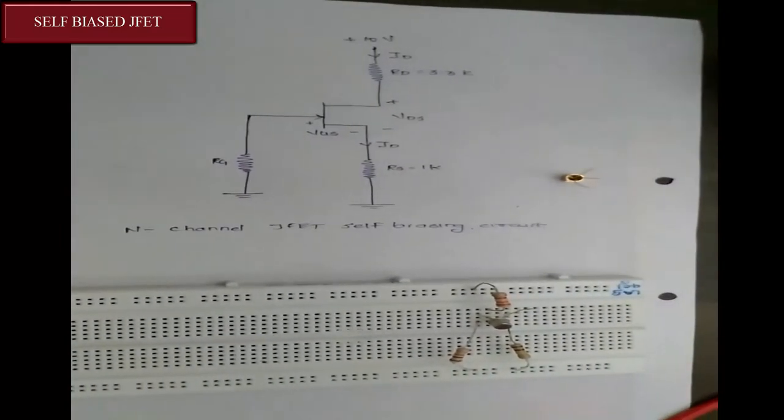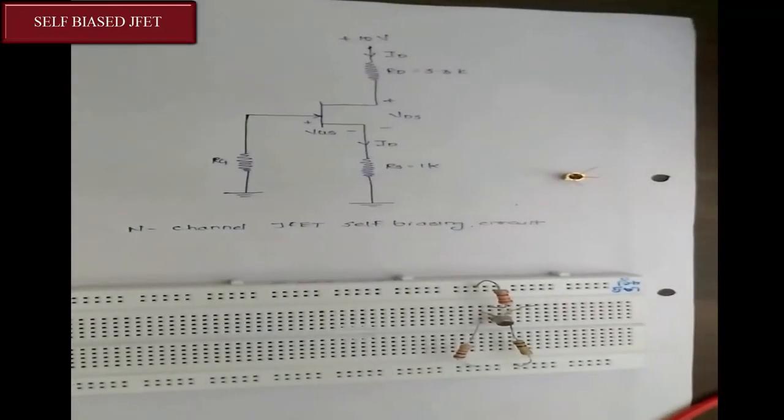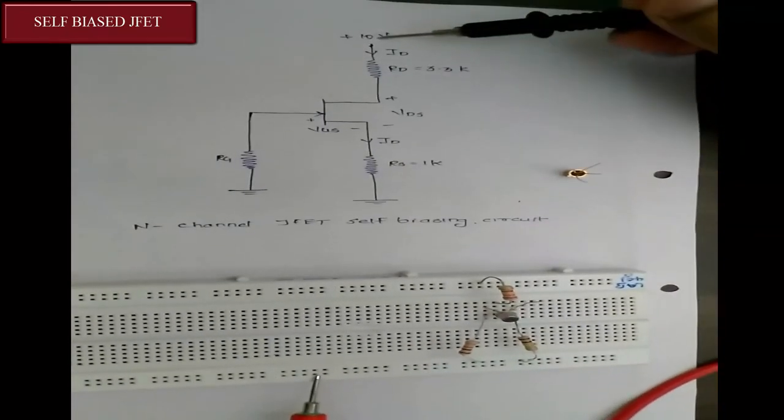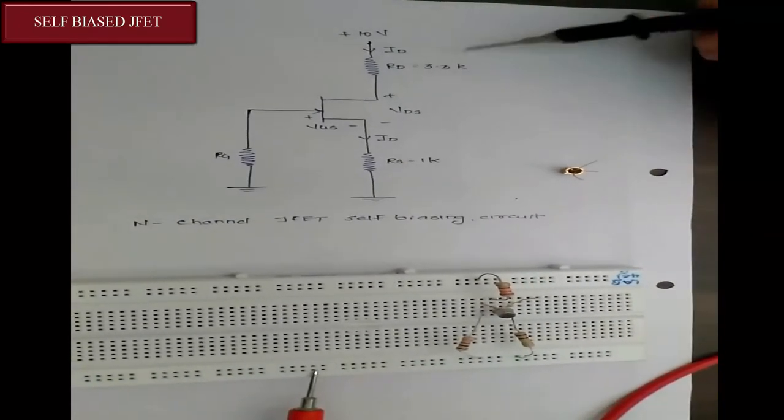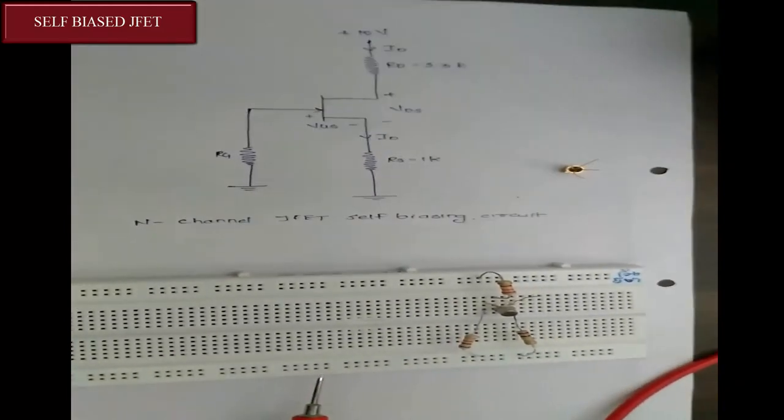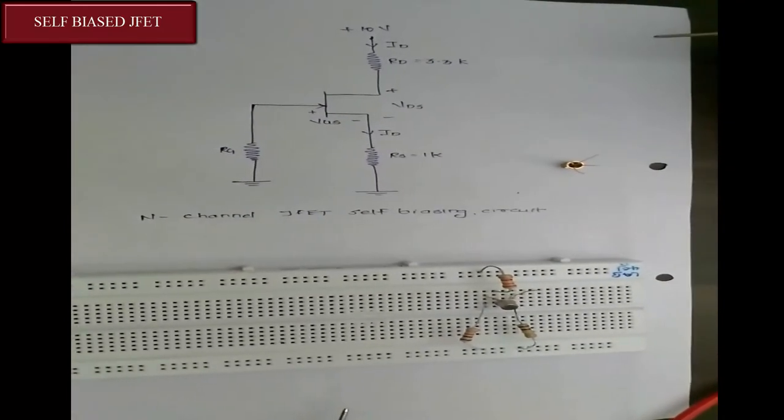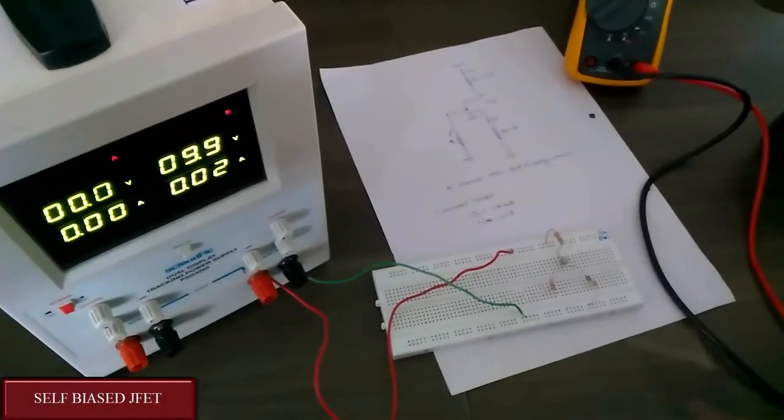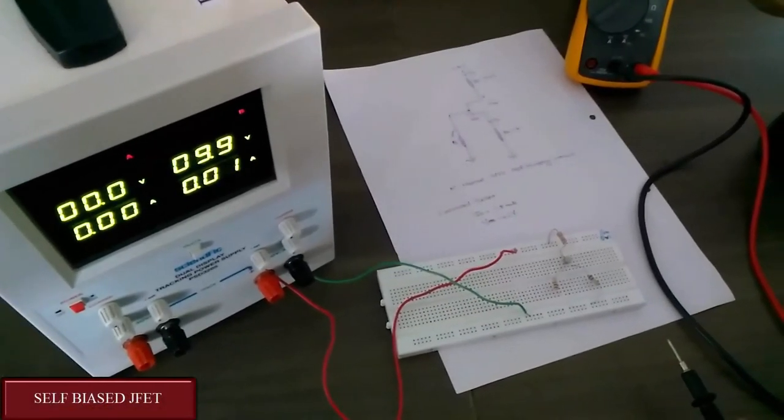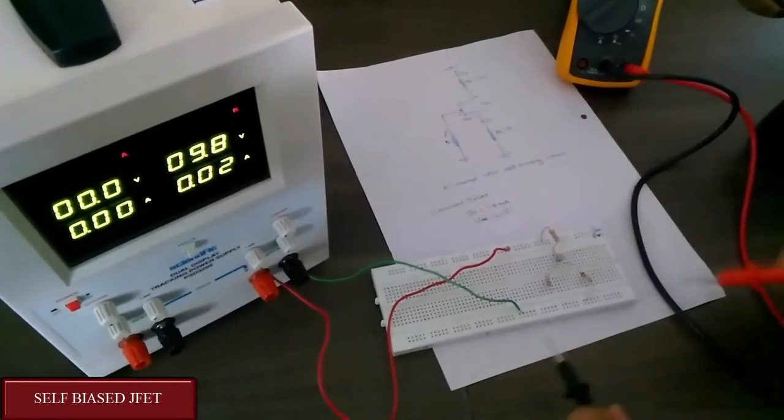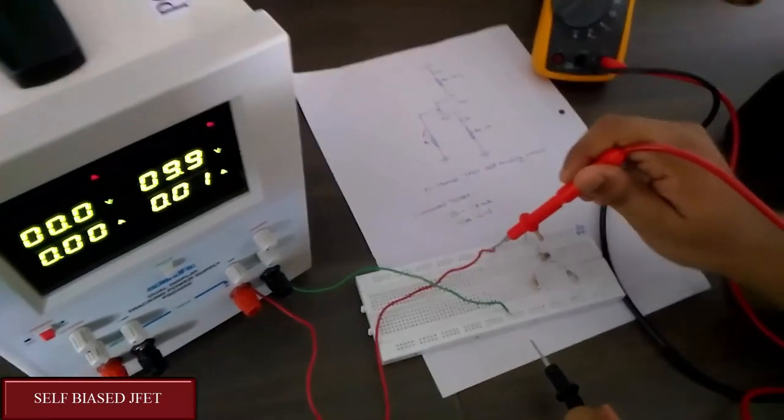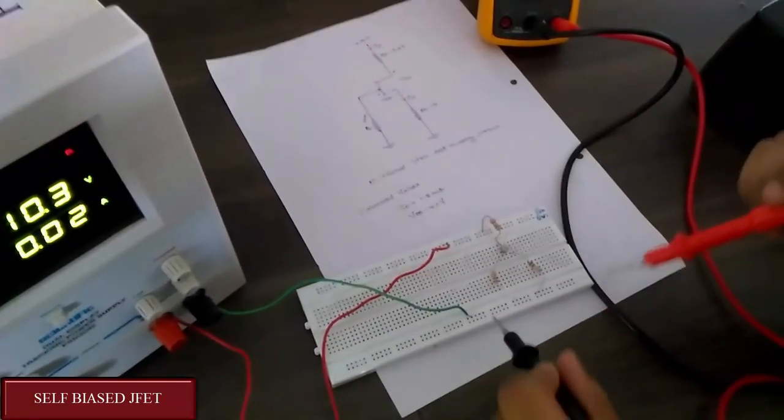Now as we know, we have used three resistors with a supply of 10V. The values of resistors are 3.3kΩ, 1kΩ, and 1kΩ. So now we will apply the voltages and check the output. This is the circuit. The power supply is already set at 10V. The positive supply is given here and the negative supply is given here.